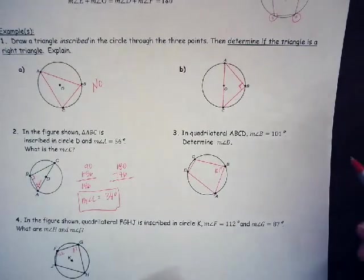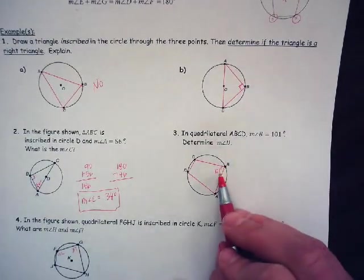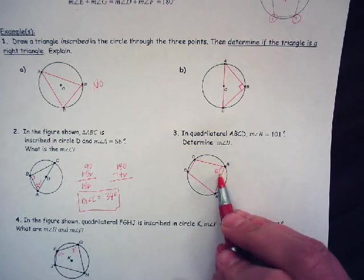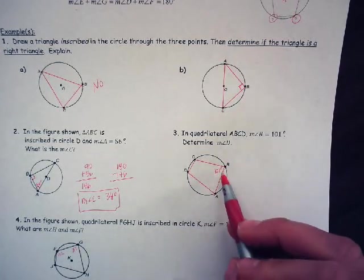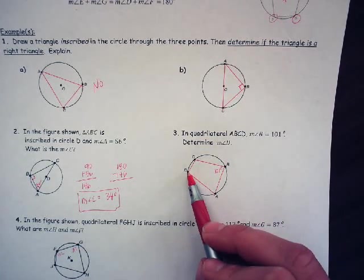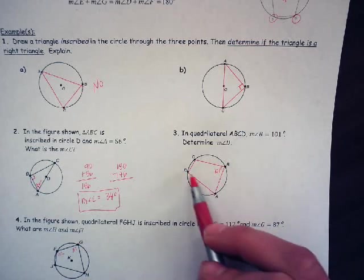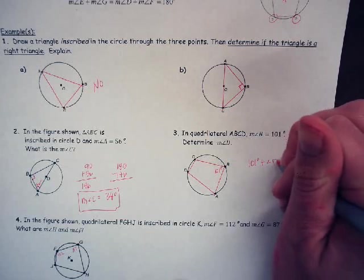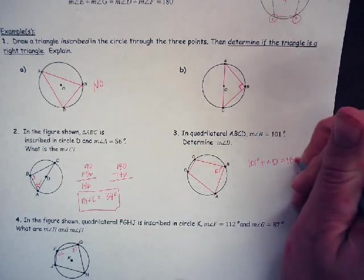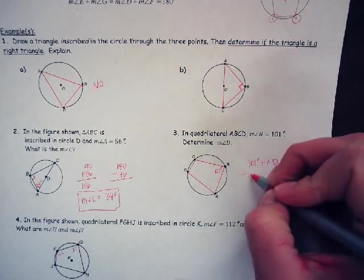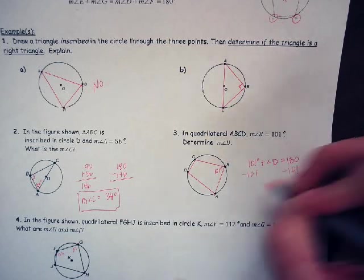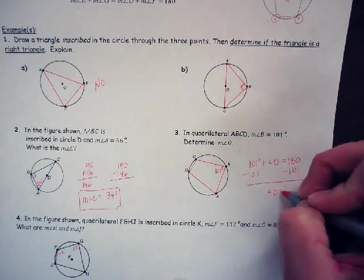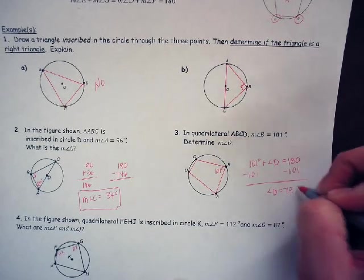In quadrilateral ABCD, measure of angle B is 101 degrees. Determine angle D. Well, this is opposite angle. So it's supplementary, which means they add up to 180. So I can take 101 plus angle D has to equal 180. So I can subtract 101 from both sides, and angle D equals 79 degrees.